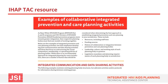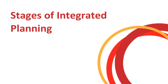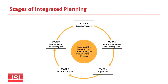Now we're going to launch into a discussion of the actual stages of integrated planning. Integrated HIV prevention and care planning is a continuous process with five main stages. We want to highlight that integrated planning is ongoing and iterative, meaning it's cyclical and lessons learned can feed into subsequent stages and inform improvements. Jurisdictions do not necessarily start over in stage one, but can reorganize or update plans based on previous planning activities. Communicating and sharing progress is the fifth stage, but is something you should be doing throughout the entire cycle.